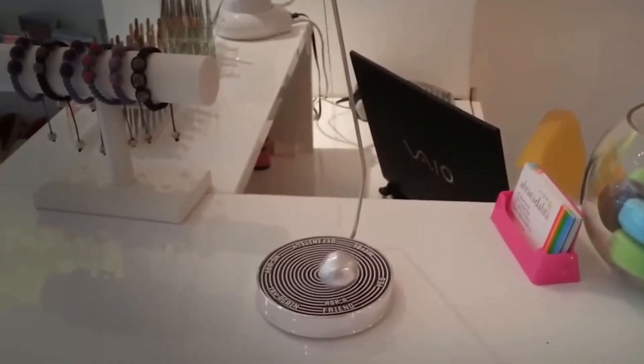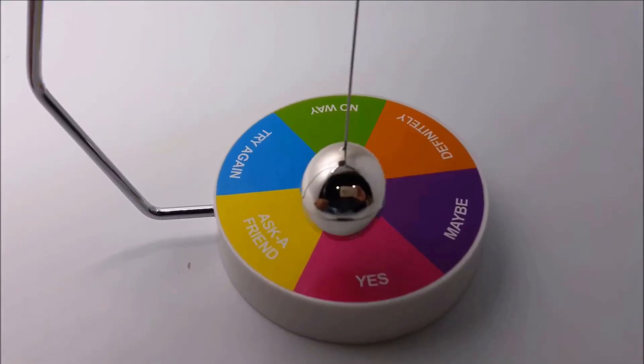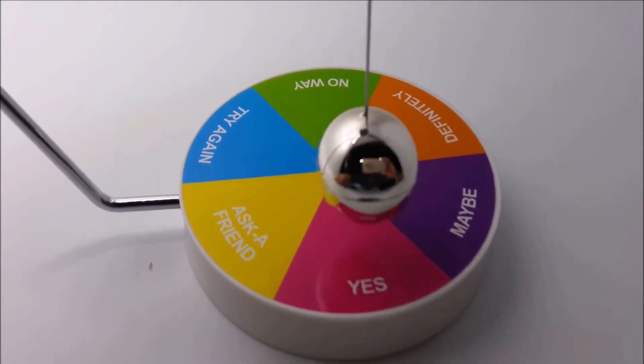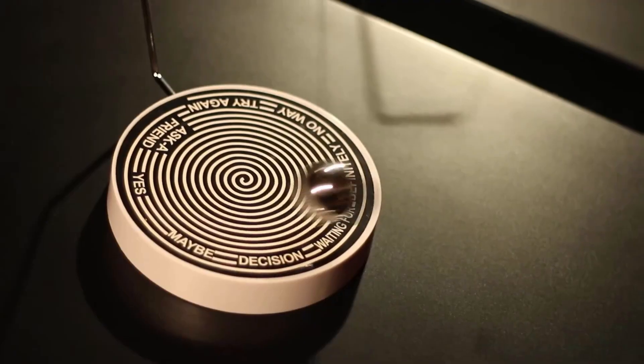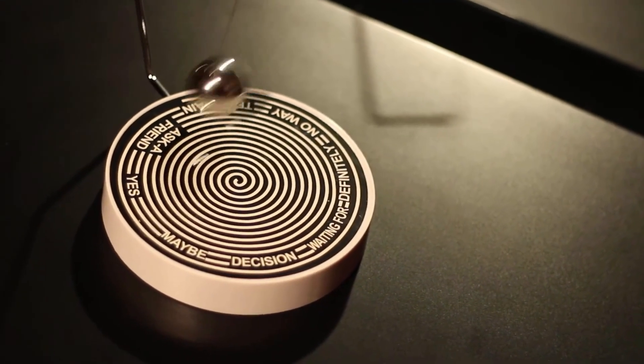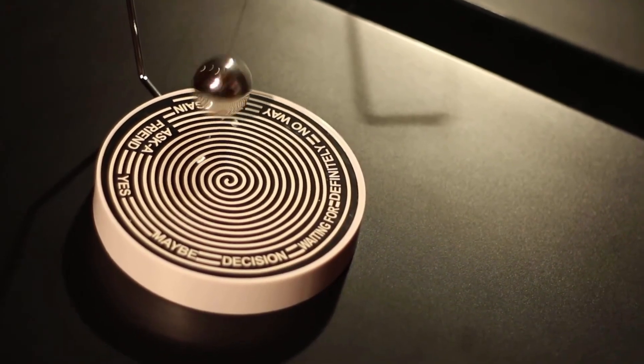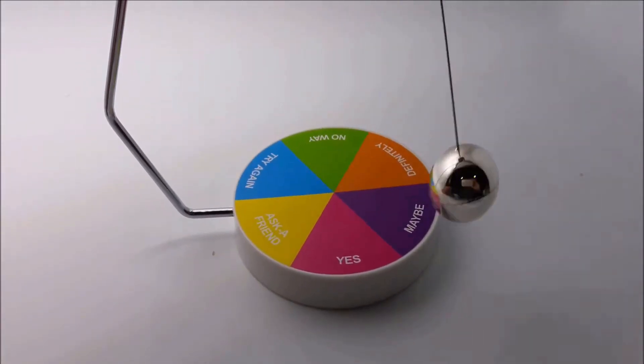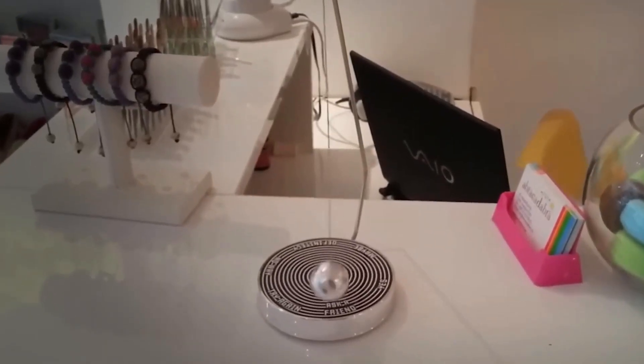As the pendulum swings, it's simultaneously attracted and repelled by these hidden forces, creating an unpredictable, erratic path. It never swings the same way twice. This is a perfect example of chaos theory, where tiny changes in the starting conditions lead to wildly different outcomes. It's a fascinating gadget that shows how even simple magnetic interactions can create complex, seemingly random behavior.